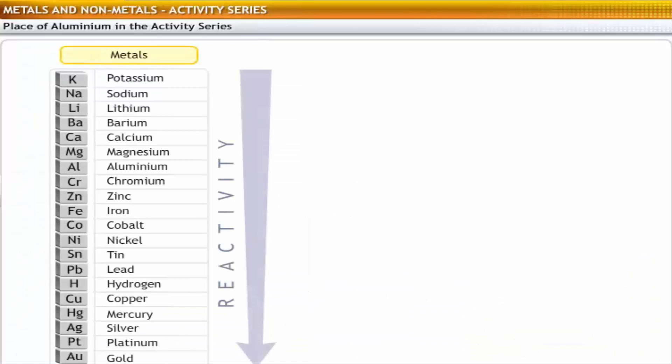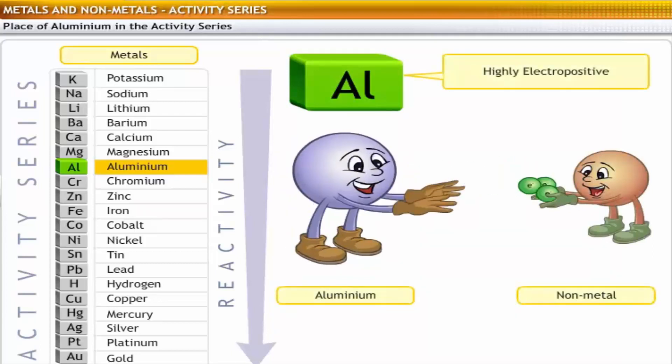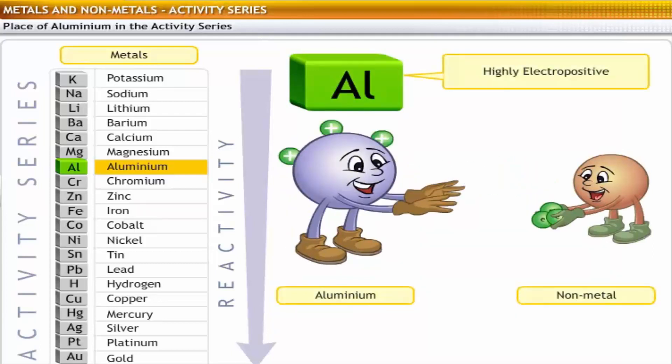Let's now take up aluminium, a well-known metal in the activity series, and analyze its properties as well as the method for its extraction. Aluminium is a highly electropositive element and so forms positive ions.